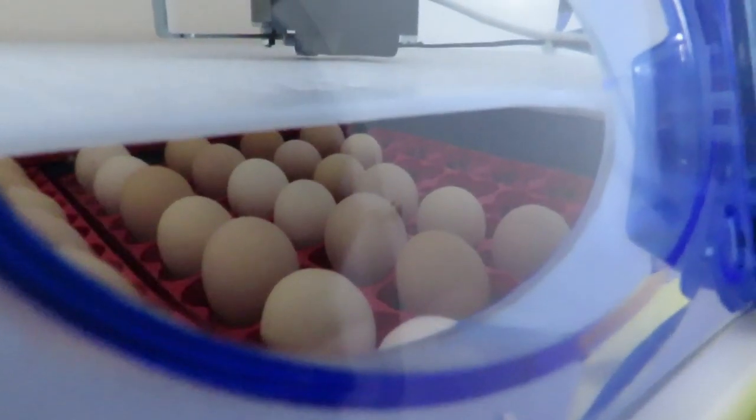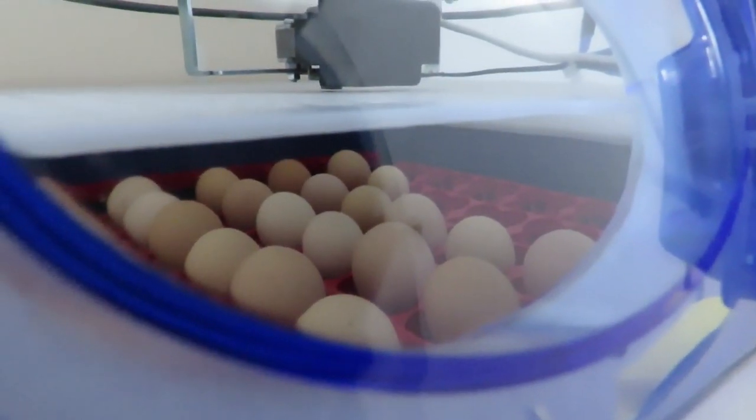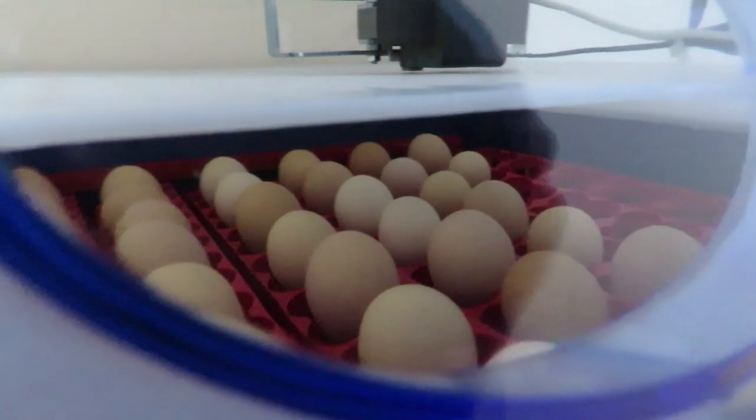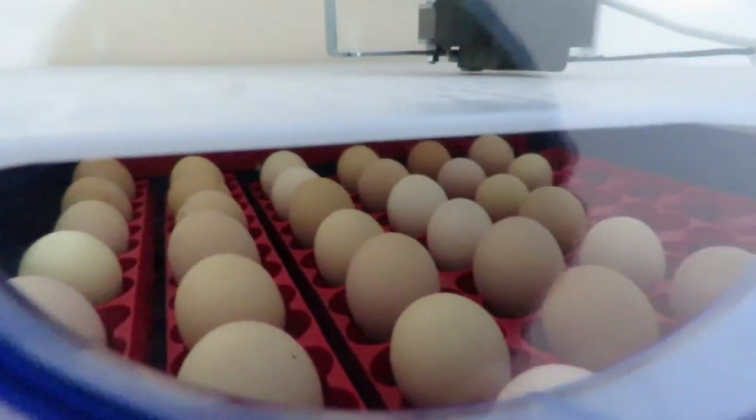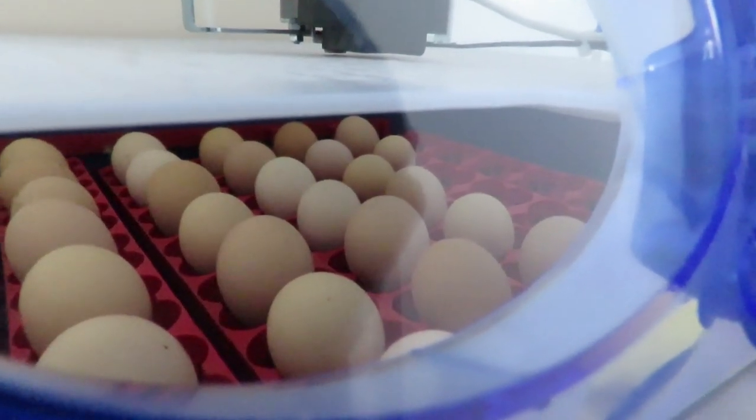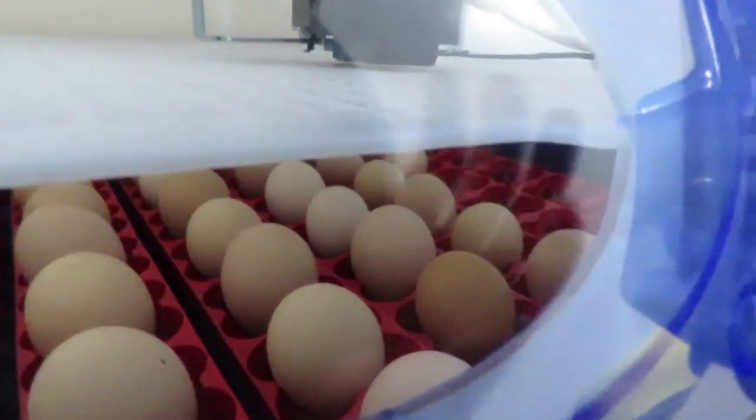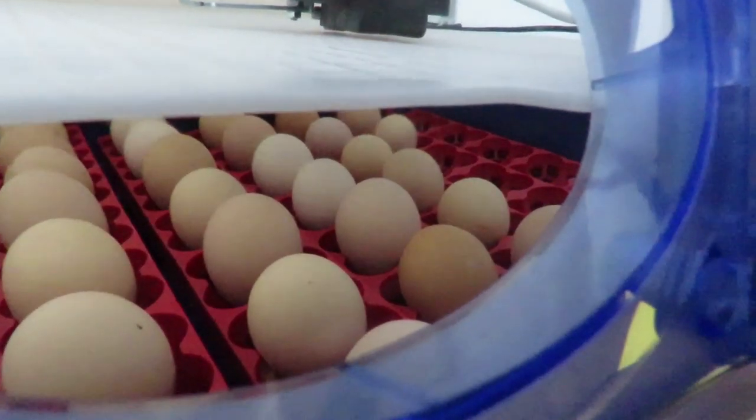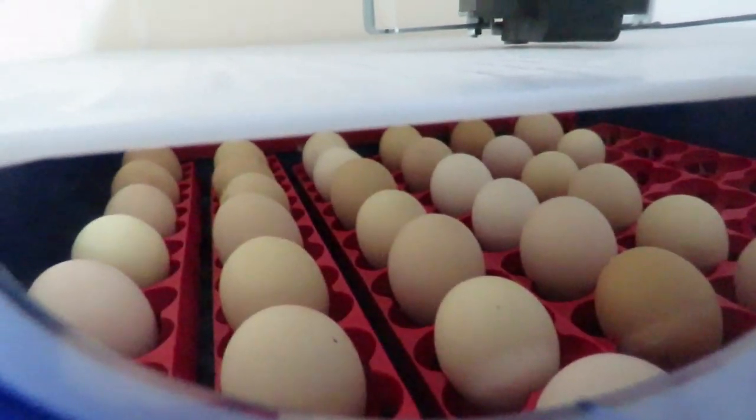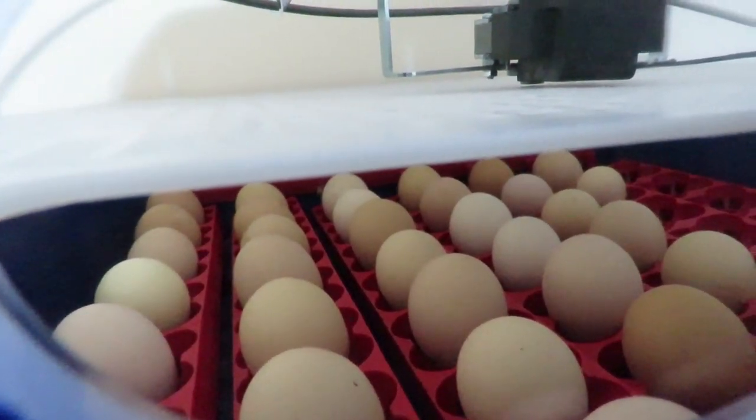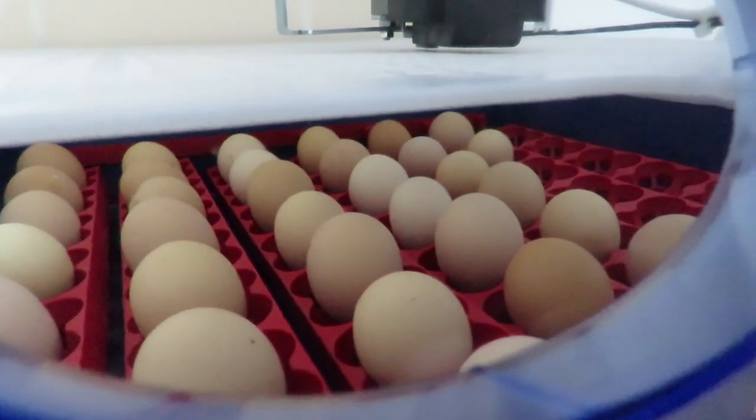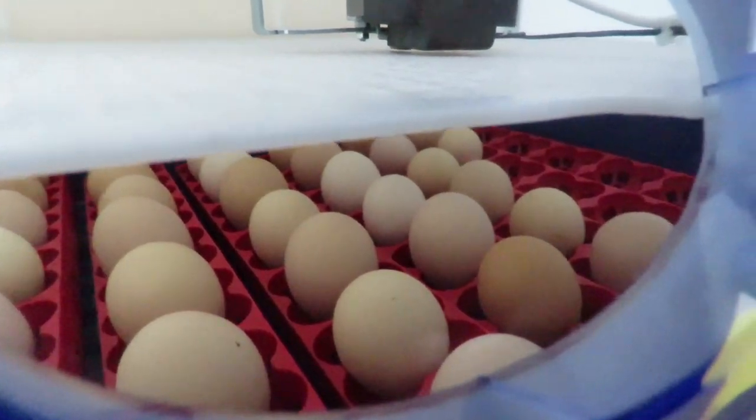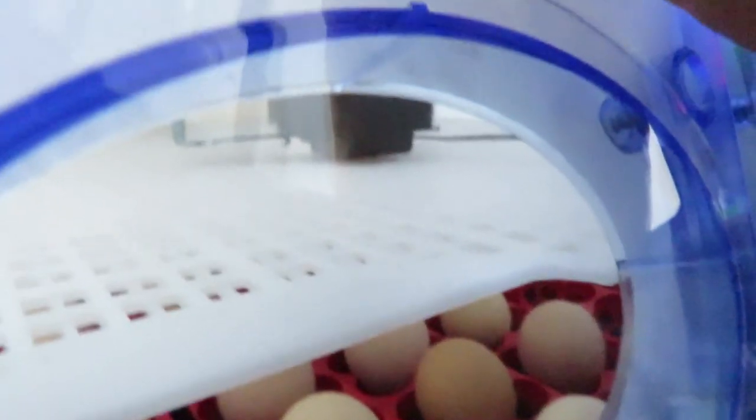So it's actually got a lot of visibility, you're actually getting a little bit of reflection off that lens there, if I take that away, you can see clearly into that incubator, and you can see what's going on, so when the chicks start to hatch, we're going to be able to get really good visibility, and see what's going on.